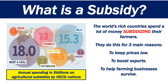The world's rich countries spend a lot of money subsidising their farmers. They do this for three main reasons: one, to keep prices low; two, to boost exports; and three, to help farming businesses survive.